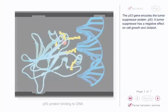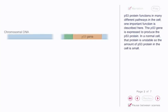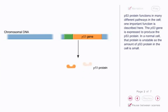The p53 gene encodes the tumor suppressor protein p53. A tumor suppressor has a negative effect on cell growth and division. p53 protein functions in many different pathways in the cell. One important function is described here. The p53 gene is expressed to produce the p53 protein. In a normal cell, that protein is unstable, so the amount of p53 protein in the cell is small.